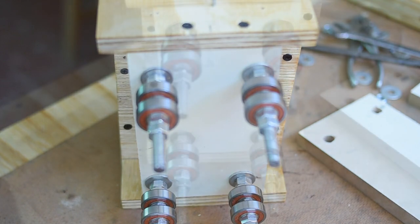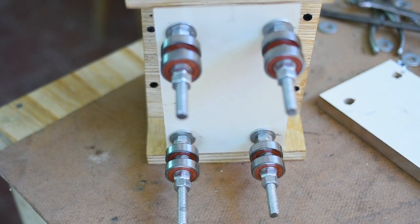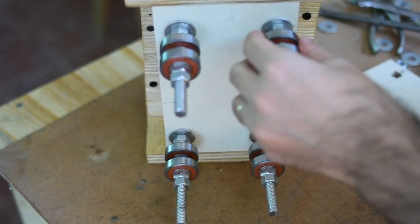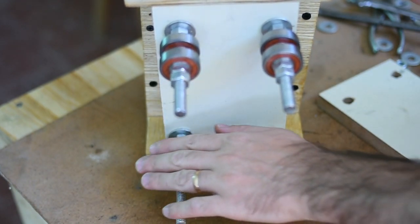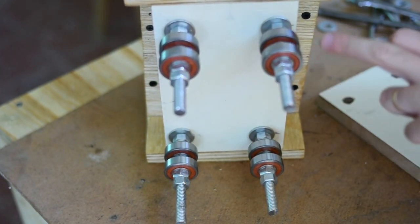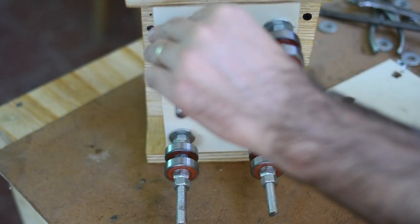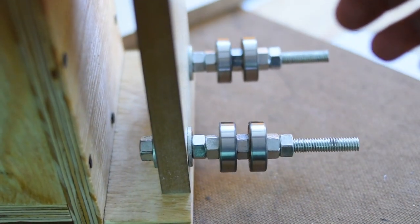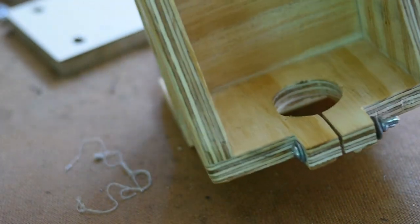Ahora vamos a la parte que en mi parecer es la más importante, que es la parte del riel, o cómo va a correr este taladro vertical sobre ese caño estructural. Lo voy a hacer con estos rodamientos, que son rublemanes, que están todas a la misma distancia, y separados por una tuerca central y apretados por tuercas laterales, para que quede fija la parte central y el rubleman gire libremente.